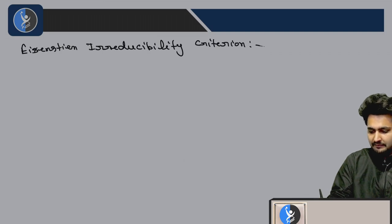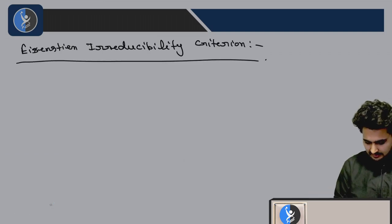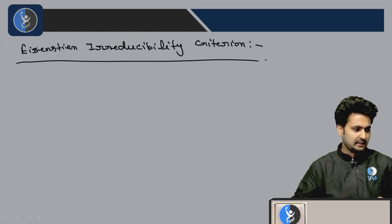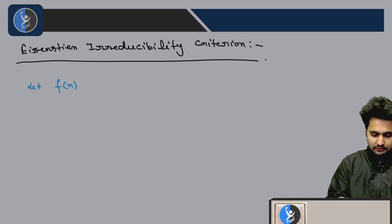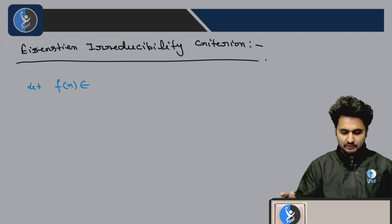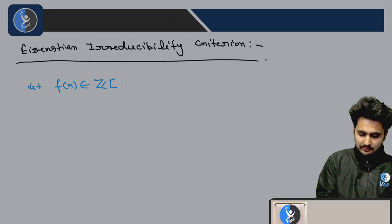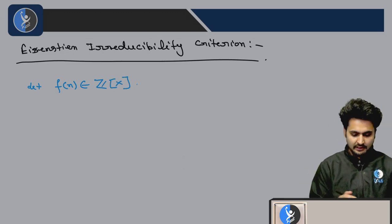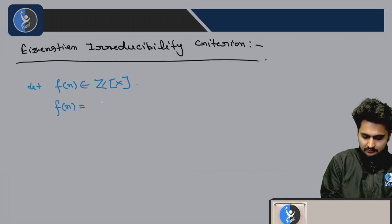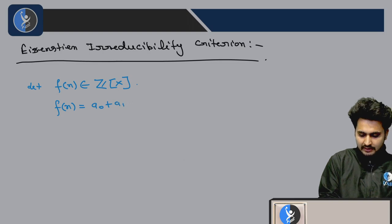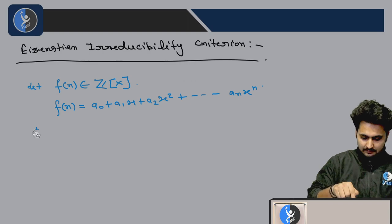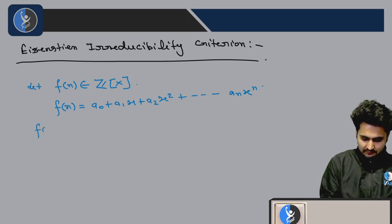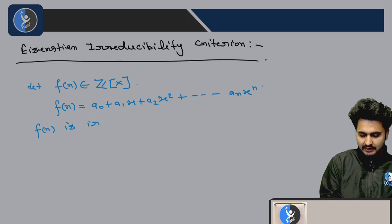So what is Eisenstein's irreducibility criterion? Let me write it. By Eisenstein irreducibility criterion, let f(x) belongs to Z[x], and suppose f(x) equals a_0 plus a_1 x plus a_2 x squared up to a_n x to the power n. This is irreducible over Q.